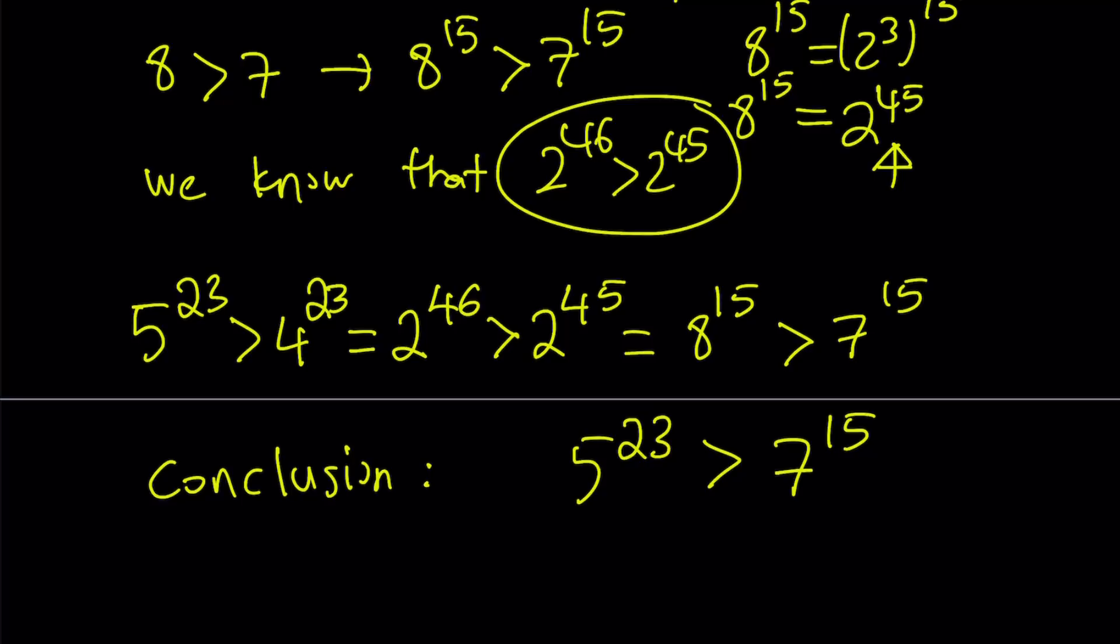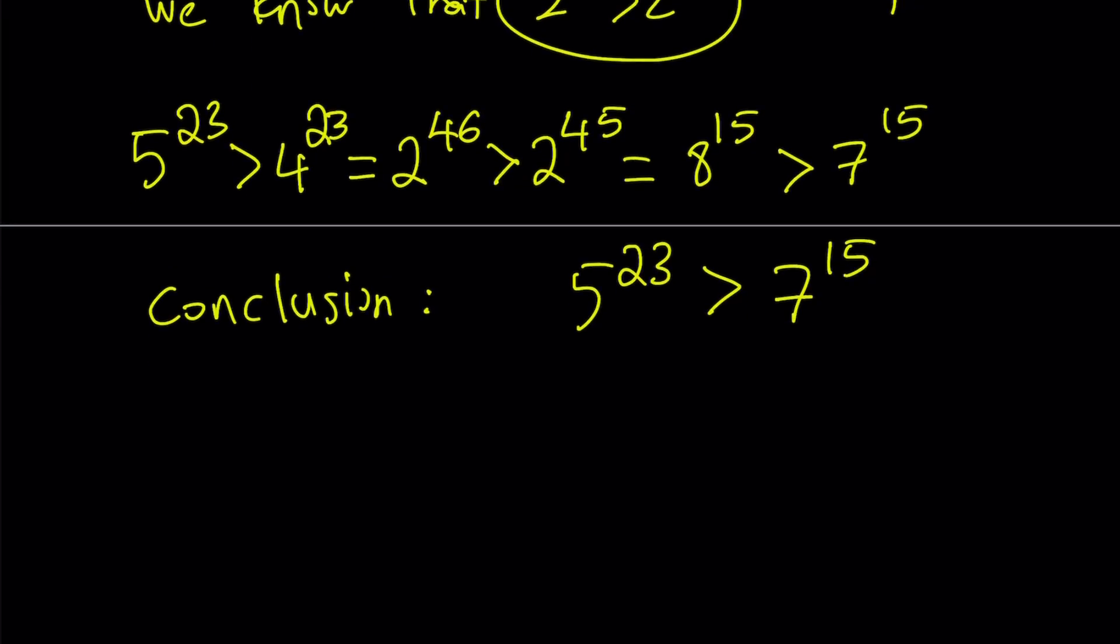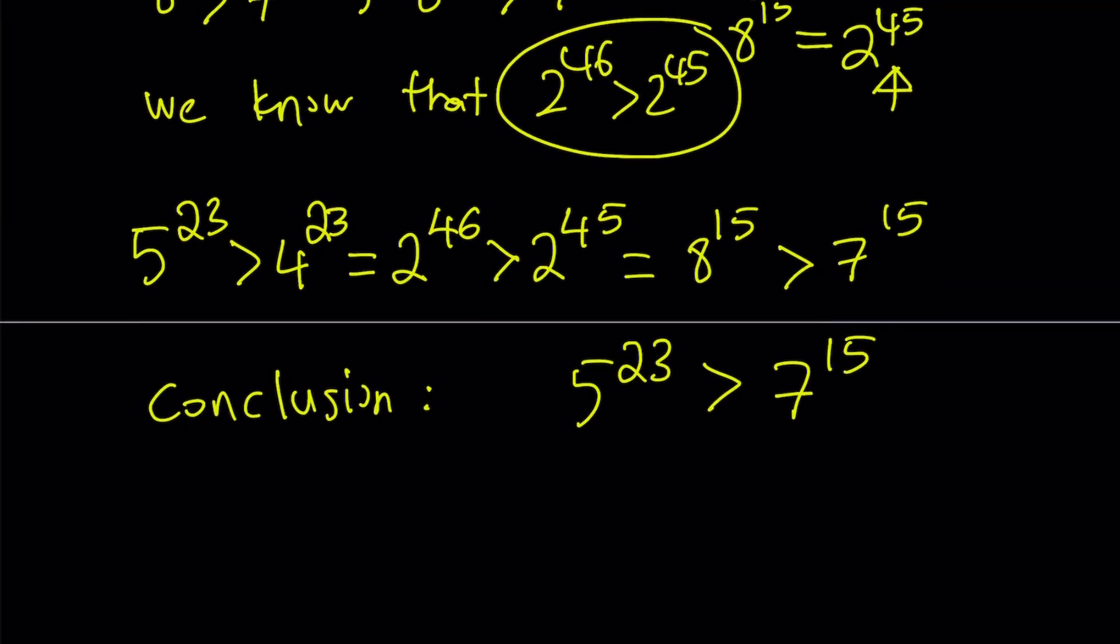A lot of times people say, if you have a situation where we compare two exponential numbers, usually the one with the smaller exponent is the larger one. Well, that depends. That depends on the numbers. In this case, the one with the larger exponent wins. And it may differ from case to case.